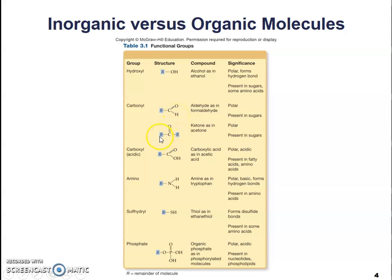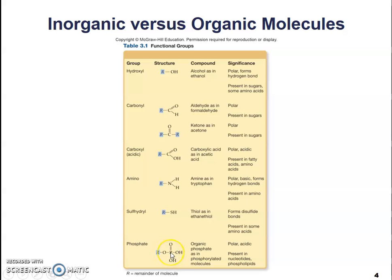Here we have two carbon chains on either side of a carbon that has been double bonded to an oxygen. Here we have a carboxyl acid — a chain of carbons bonded to a carbon that has been double bonded to an oxygen and single bonded to an OH, which is a hydroxide. An amino is a carbon chain bonded to a nitrogen that is single bonded to two hydrogens. A sulfhydryl is a carbon chain bonded to a sulfur and a hydrogen. And down here we have a carbon chain bonded to an oxygen that has been bonded to a phosphate, which is also bonded to an oxygen and two hydroxides.